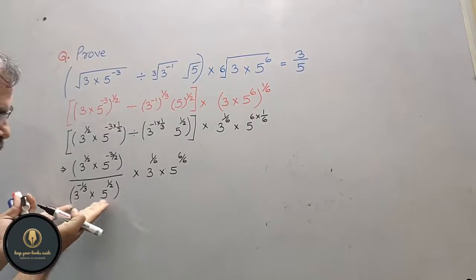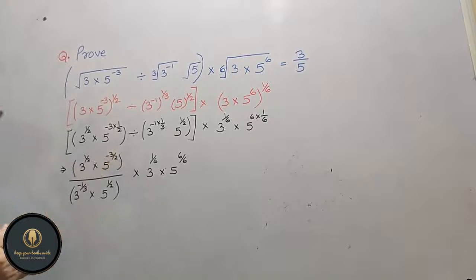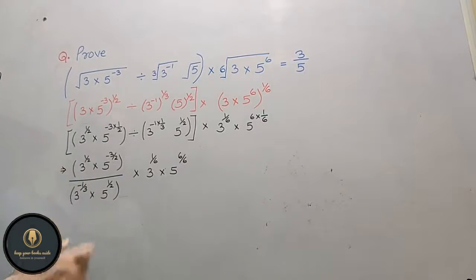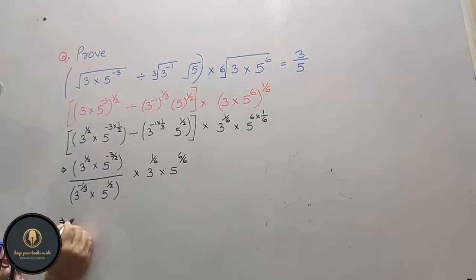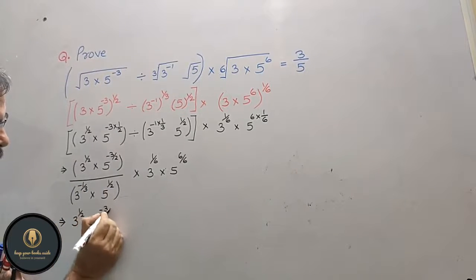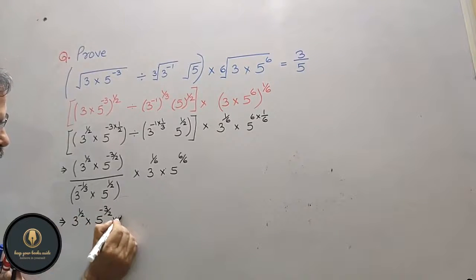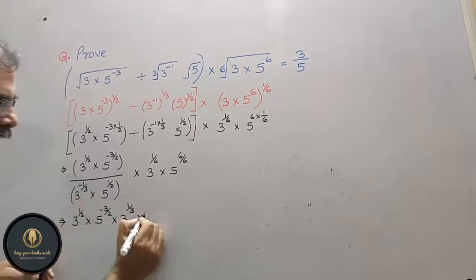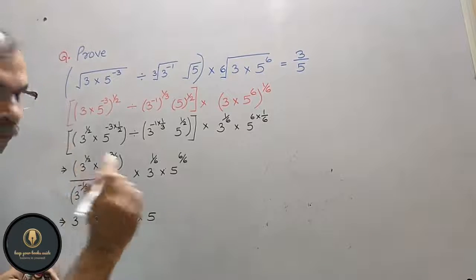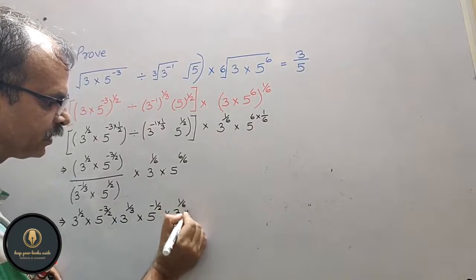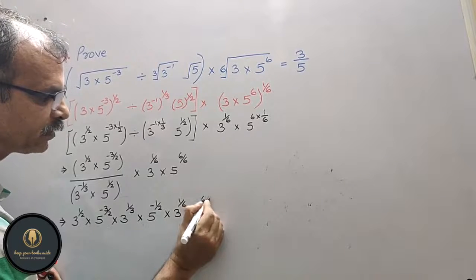Ab yah wali value ko hum upar ki taraf le ke jaayenge, to aapka kya hoga — signs change ho jaayenge. To hamara kaise aayega: aapka 3 to the power half — upar wala koi change nahi hoga — 5 to the power minus 3 by 2. Ab neeche wala: into 3 to the power plus 1 by 3, into 5 to the power minus 1 by 2, into 3 to the power 1 by 6, into 5 to the power 6 by 6.